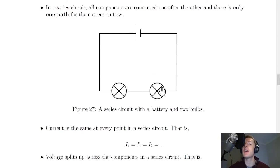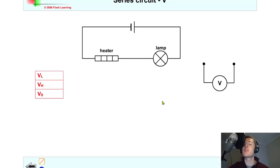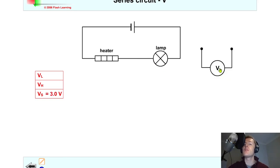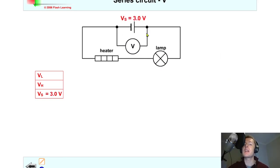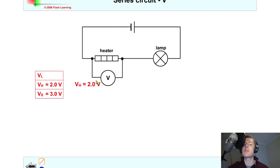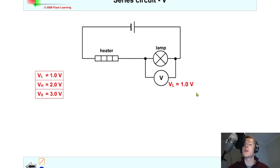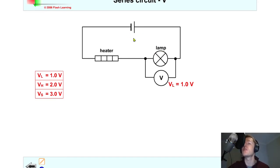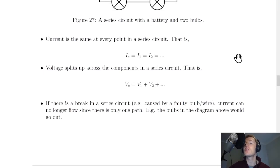To demonstrate with a simulation using the same circuit — a battery, a heater, and a lamp — we measure the voltage across each component. The voltmeter across the battery gives three volts for the supply voltage. Across the heater it gives two volts, and across the lamp it gives one volt. Two volts plus one volt adds up to three volts, which was the supply voltage, confirming the rule.